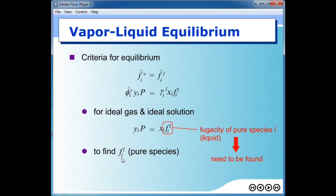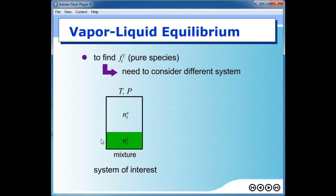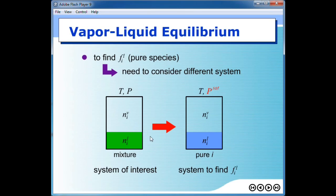It needs to be found before you can calculate mole fraction in either phase. In order to find the fugacity of pure species in liquid phase, we need to consider another system — a system containing pure species i. This is the system of interest: a mixture of many components in two phases at constant temperature and pressure. In order to find the fugacity of species i in liquid phase, we shift our system to pure species i but still holding two phases. Once you hold two phases for pure species, the pressure is no longer the system pressure — this pressure is called the vapor pressure of species i. So we change the pressure to be the vapor pressure. This is the system we use to find fugacity in liquid phase.